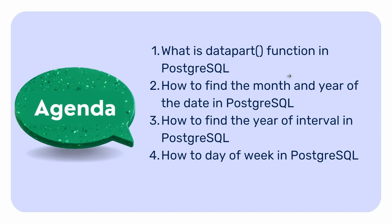First we will know about what the date_part function is in PostgreSQL. Then we will learn how to find the month and year of a date in PostgreSQL. After this we will know how to find the year of an interval in PostgreSQL, and at the end we will know how to find the day of the week of a date in PostgreSQL.